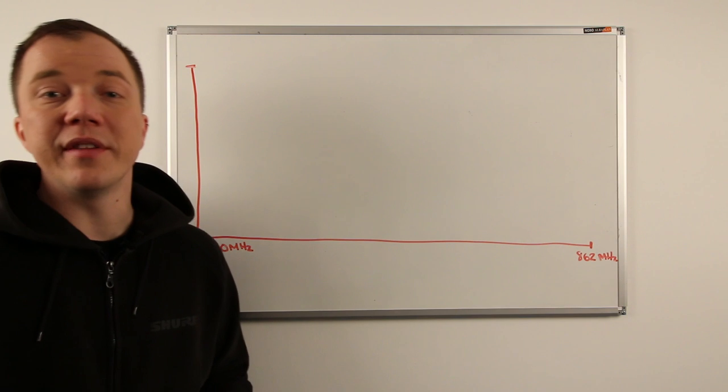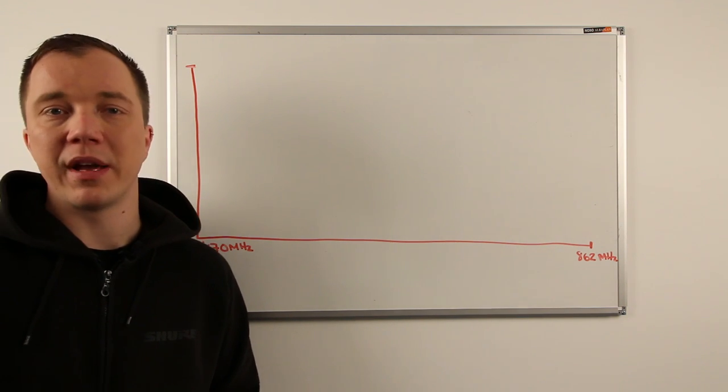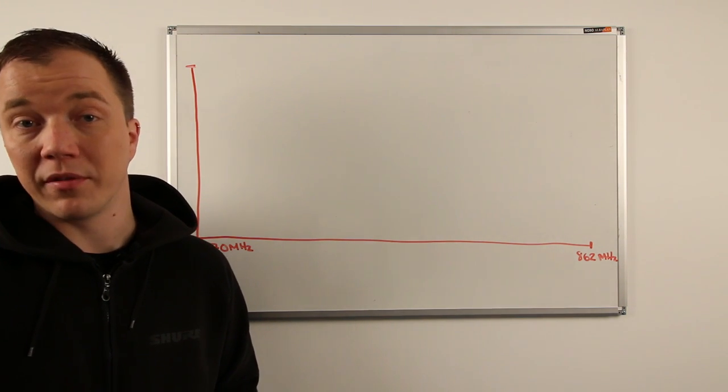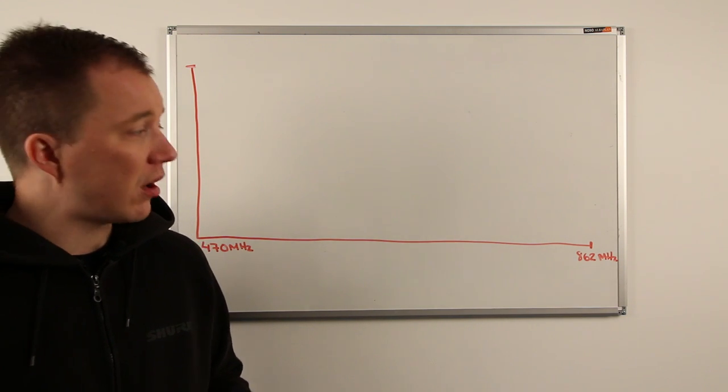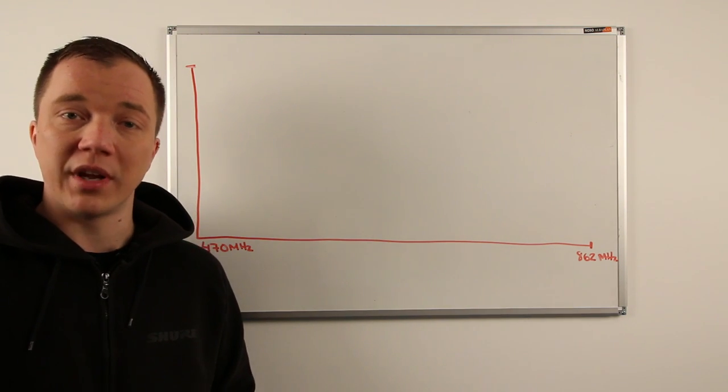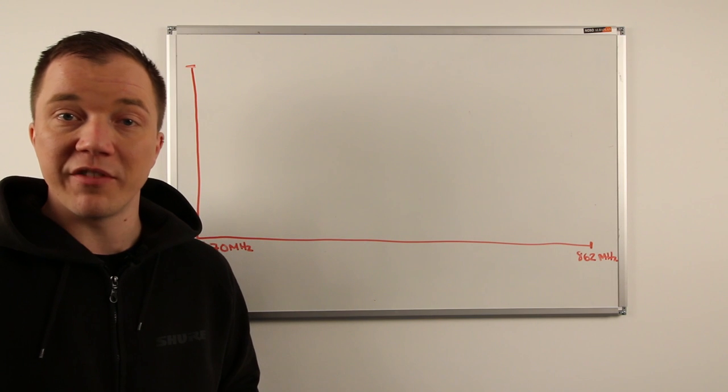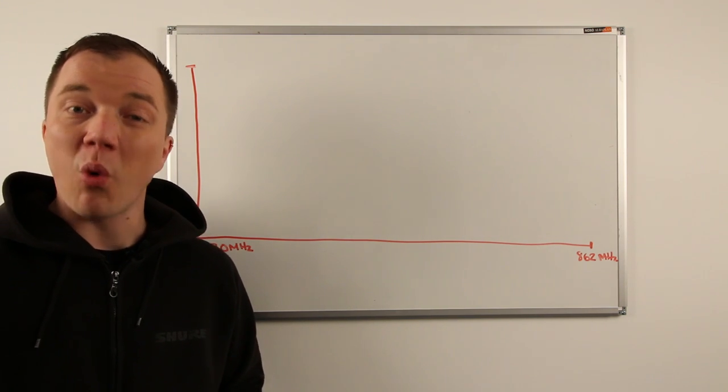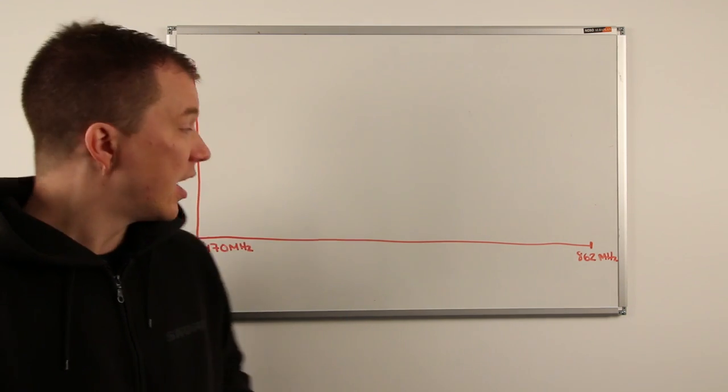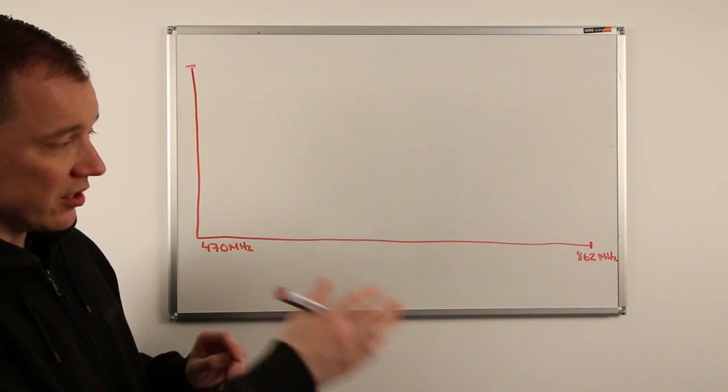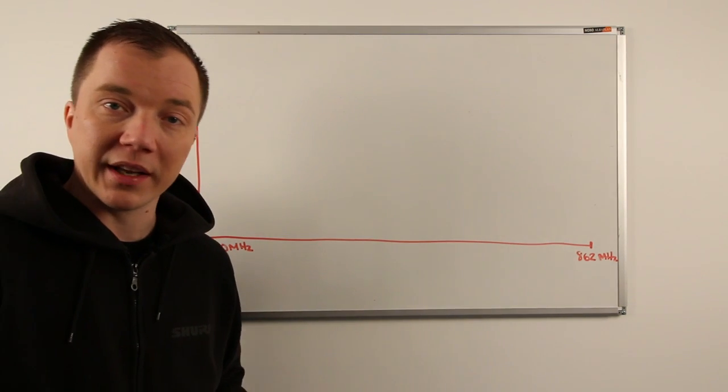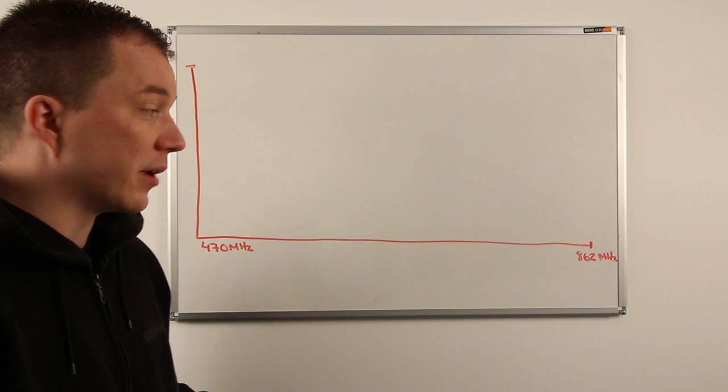We described in a previous session why the UHF bands are the preferred choice for professional users. And this is why the continuous erosion and auctioning of the so-called UHF bands is actually proving to be quite a headache for professional users. So let me illustrate here on this graph what's actually happening and hopefully make it a little bit more sense.